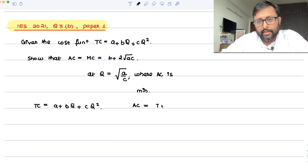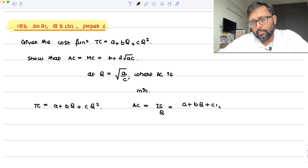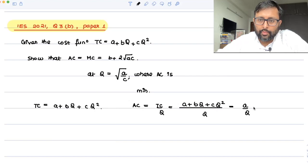AC is equal to TC upon q, which is (a + bq + cq²)/q. So this is basically a/q + b + cq.